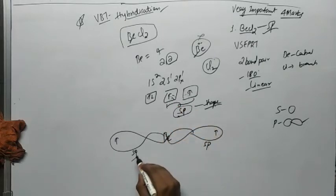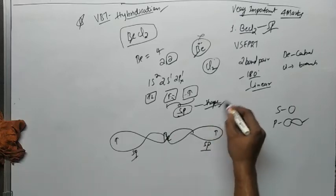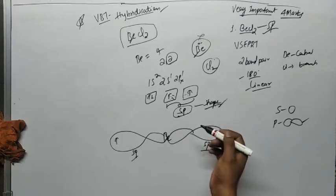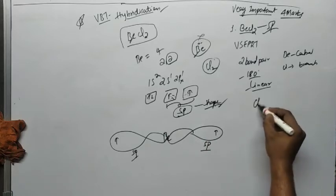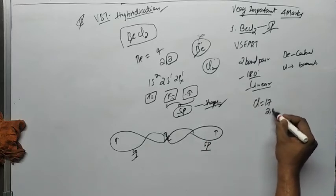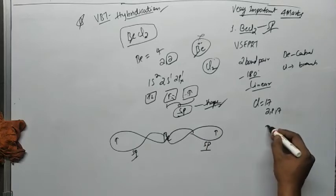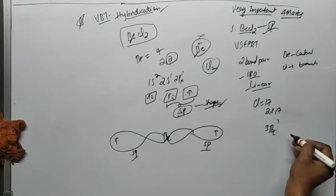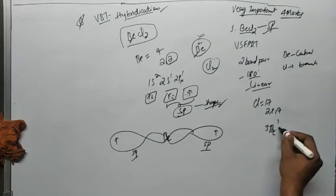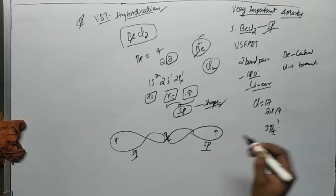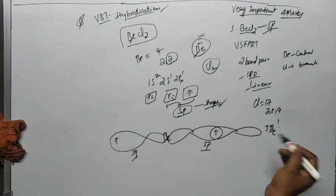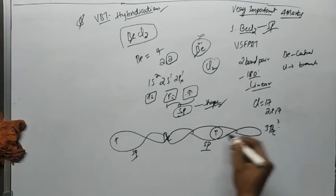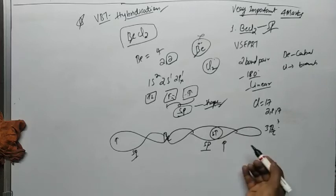Chlorine has atomic number 17 and has seven electrons in its last shell. In the 3pz orbital, chlorine has only one electron. Since the p orbital has a dumbbell shape, the 3pz orbital with one electron also has a dumbbell shape.